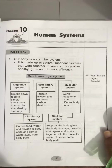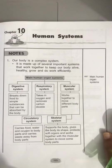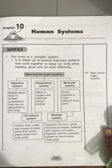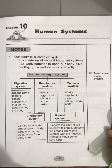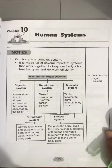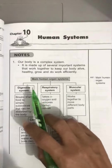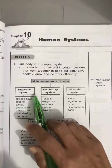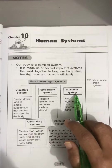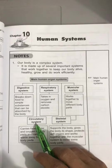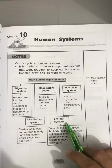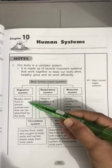We will review human systems. The main human organ systems in our body are the digestive system, respiratory system, muscular system, circulatory system, and skeletal system.